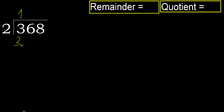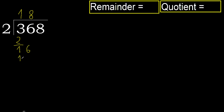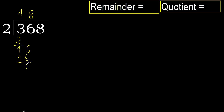Subtract. Next: 16. 2 multiplied by 8 is 16, which is not greater. Subtract.